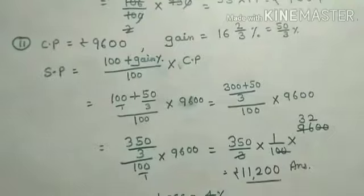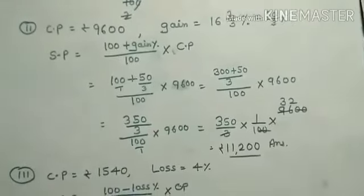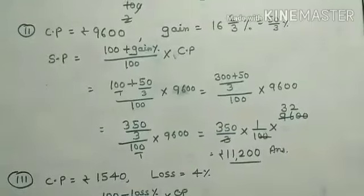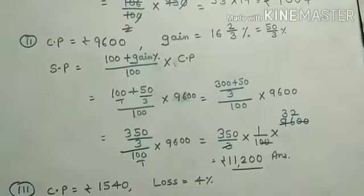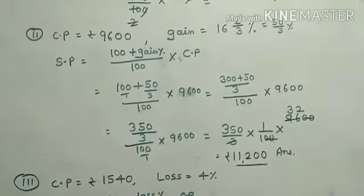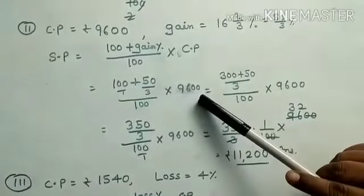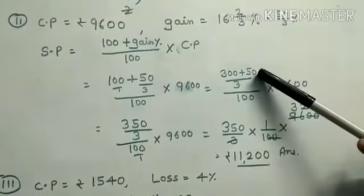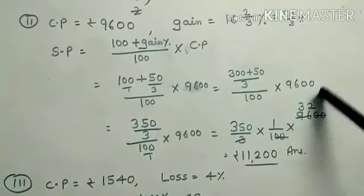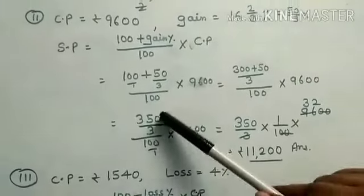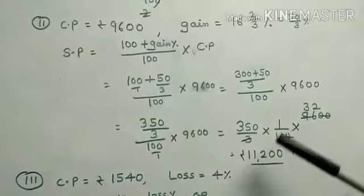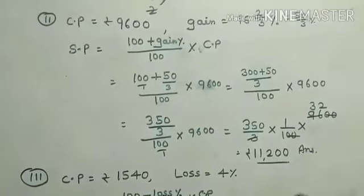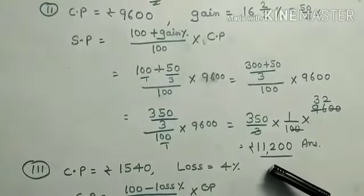Another question has a mixed fraction gain — be careful, all students. CP = ₹9600, Gain = 16⅔% = 50/3 %. SP = [(100 + 50/3) ÷ 100] × 9600. LCM gives (300 + 50)/3 = 350/3. So SP = (350/3 ÷ 100) × 9600 = (350/3) × (1/100) × 9600 = ₹11200.